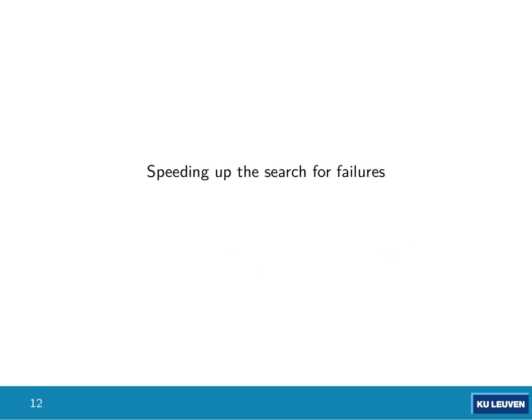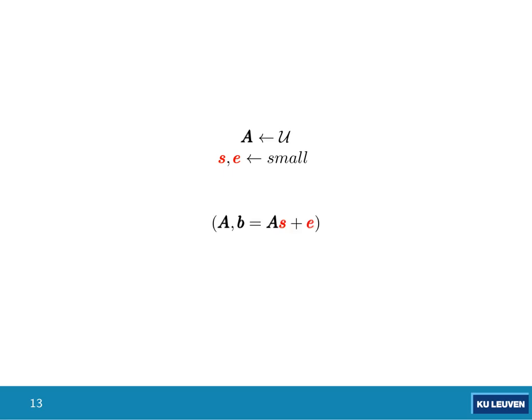That paper introduces a way to speed up the search for failures. To understand how, here is a high-level introduction to lattice-based encryption, which is based on learning with errors (LWE). We have a public matrix A made uniformly, and two small vectors S and E. We compute B = A·S + E, and publicly release A and B. The LWE problem states that recovering S and E from A and B is hard — it's even hard to distinguish A and B from uniformly random values. We call (A, B) an LWE sample.